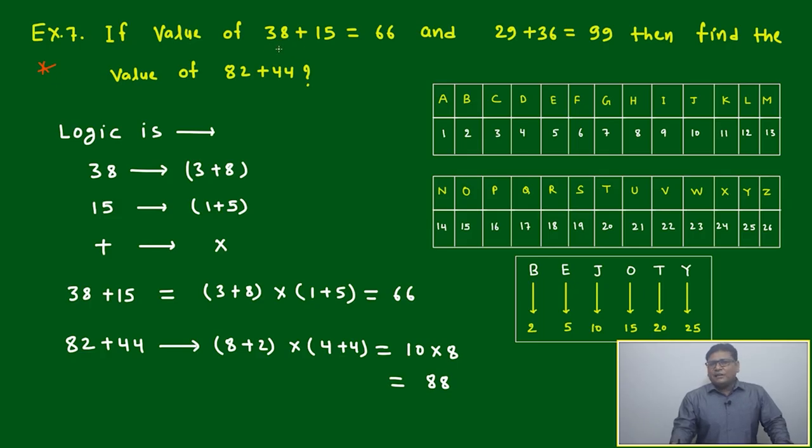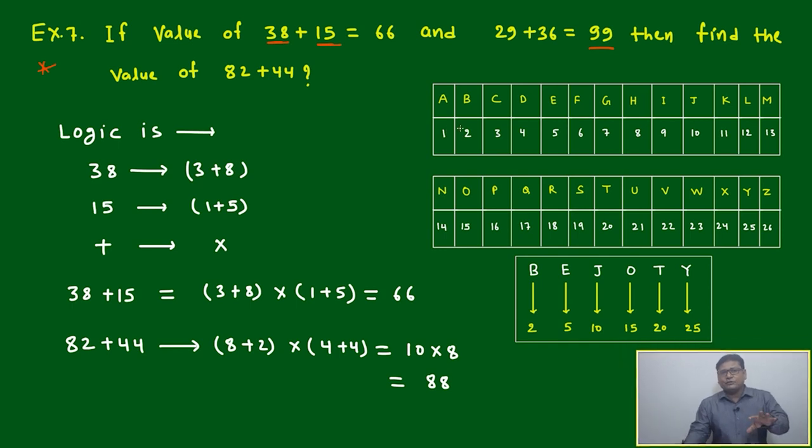Here you can see it has no relation with alphabet positions, only based on mathematical relations among the given numbers. Like 38 plus 15, we know 38 plus 15 will become 53, but here it is given 66. 29 plus 36 will become 65 actually, but here it is written 99. Then 82 plus 44, how will we write it?